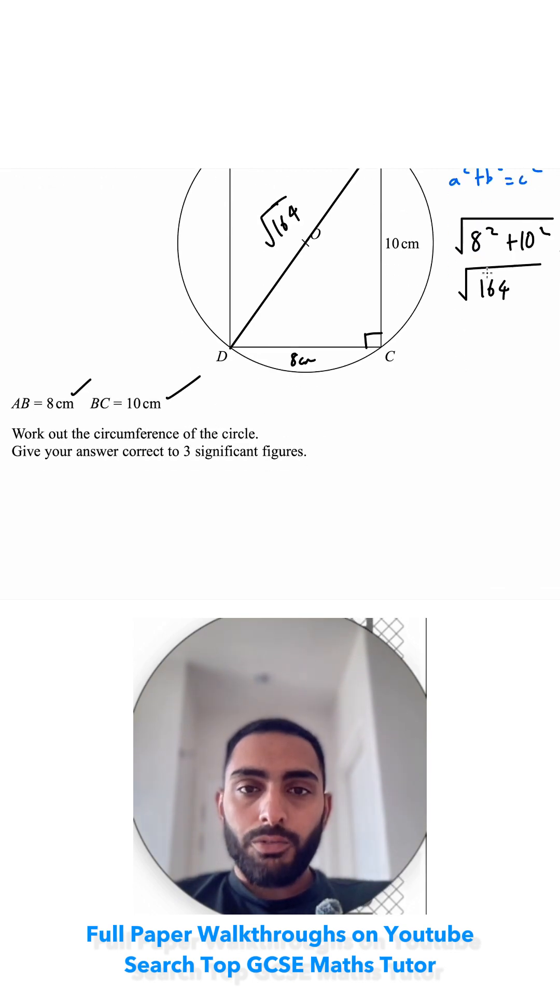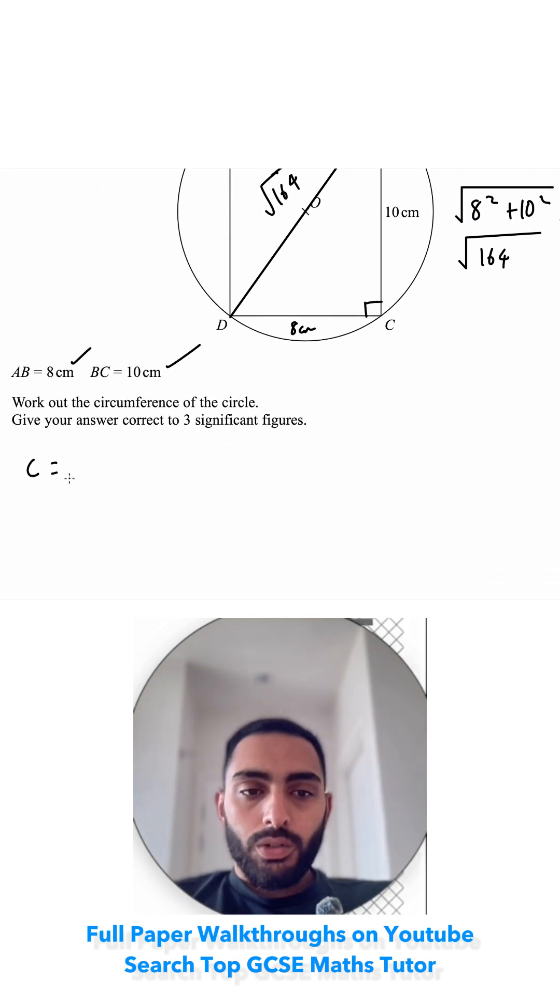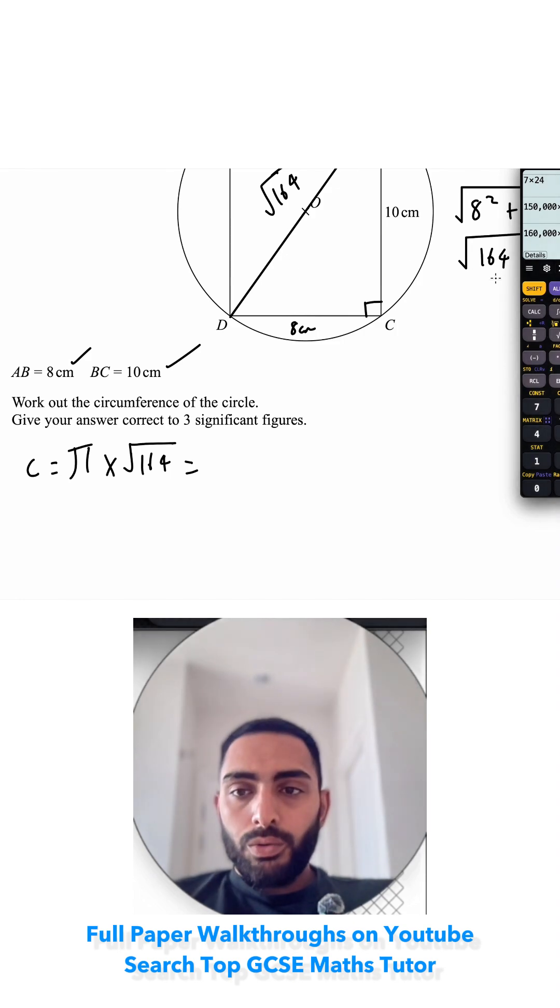So my circumference is equal to π multiplied by √164. Let's type that in. So √164 multiplied by π, which is 40.2320.